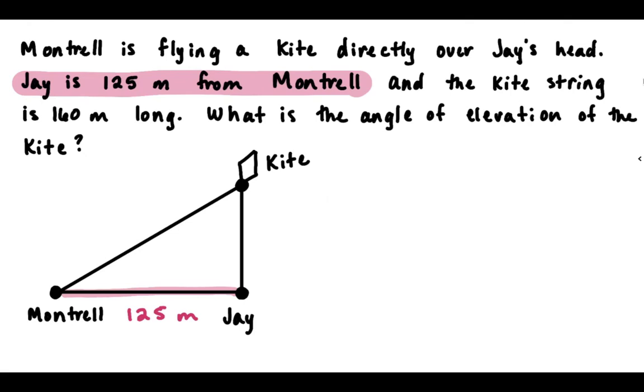Keep reading. The kite string is 160 meters long. There's another piece of information. So kite string is 160 meters long. So which side of our triangle is the kite string? Well, Montrell is flying the kite. So we want the distance from Montrell to the kite. That's going to be the string, right? So here's our kite string. So that is going to be 160.